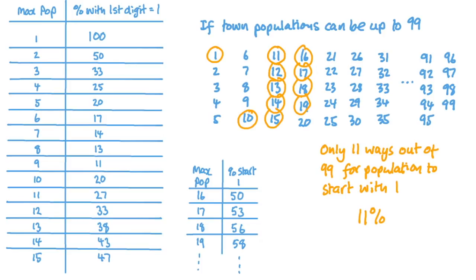Then, as we work our way through possible populations up to 100, then 101, and so on, up to 199, the proportion of possible populations with a first digit of one gradually increases until you see that there are 111 out of 199 ways of having a first digit of one in the numbers, up to 199. That's about 56%.